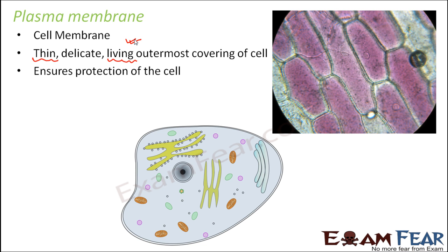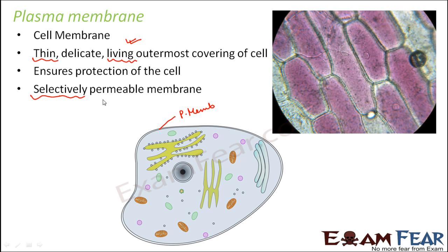When you look at the cell, this is your plasma membrane, and it is a selectively permeable membrane. What do we mean by selectively permeable? Since it acts as the boundary, it has to ensure that only the right materials get in and the wrong materials are not allowed to enter. The membrane allows only selected particles — it is not open to all particles. It is very choosy or selective, which is why it is known as a selectively permeable membrane.